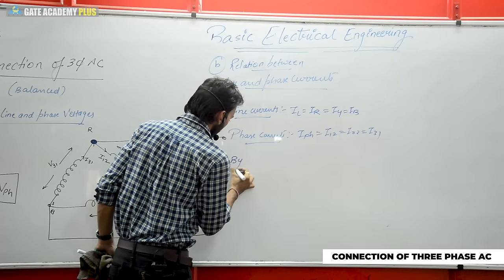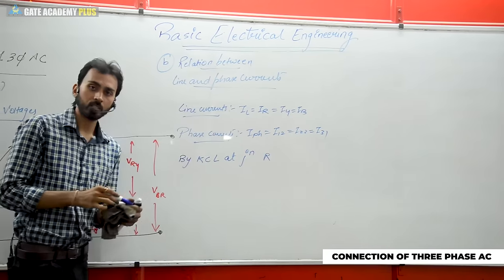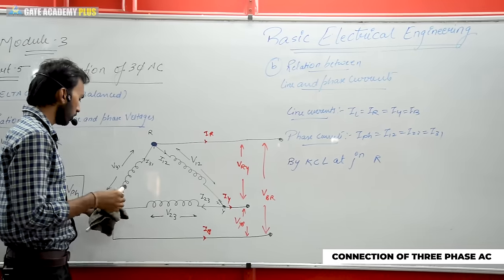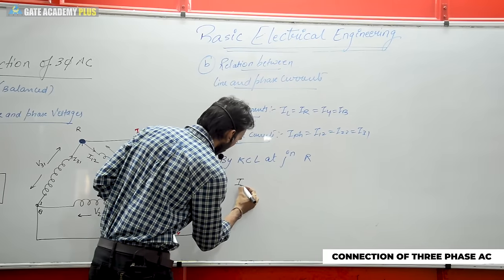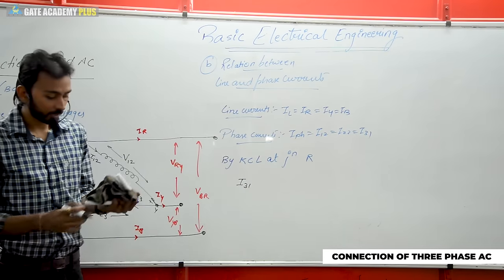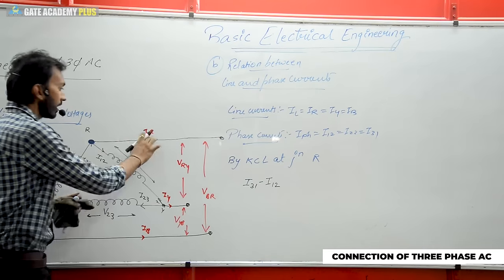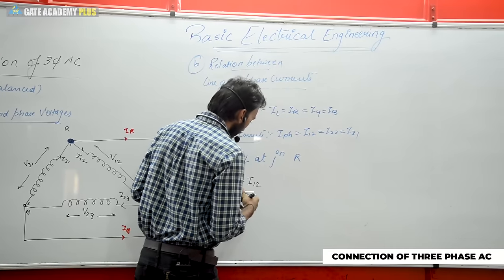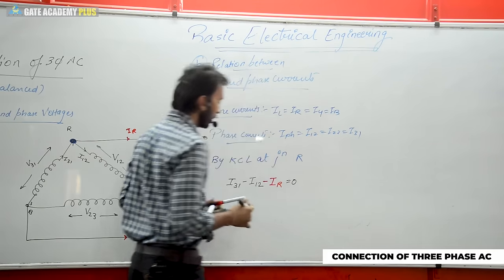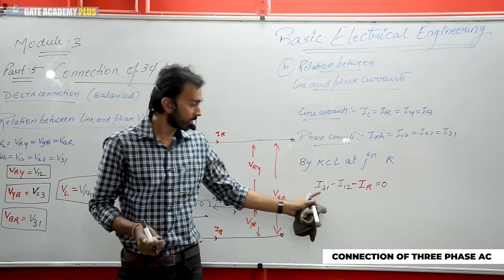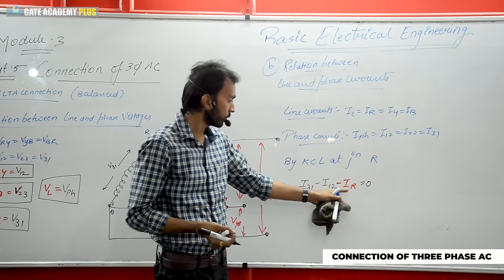In star connection, line and phase currents were directly equal to each other, and we used Kirchhoff's voltage law to derive the voltage relation. Now in delta we have three current directions, and to establish their relation we will use Kirchhoff's current law. So applying KCL at junction R: incoming current I31 is positive, outgoing phase current I12 is negative, and outgoing line current IR is also negative. This equals zero.